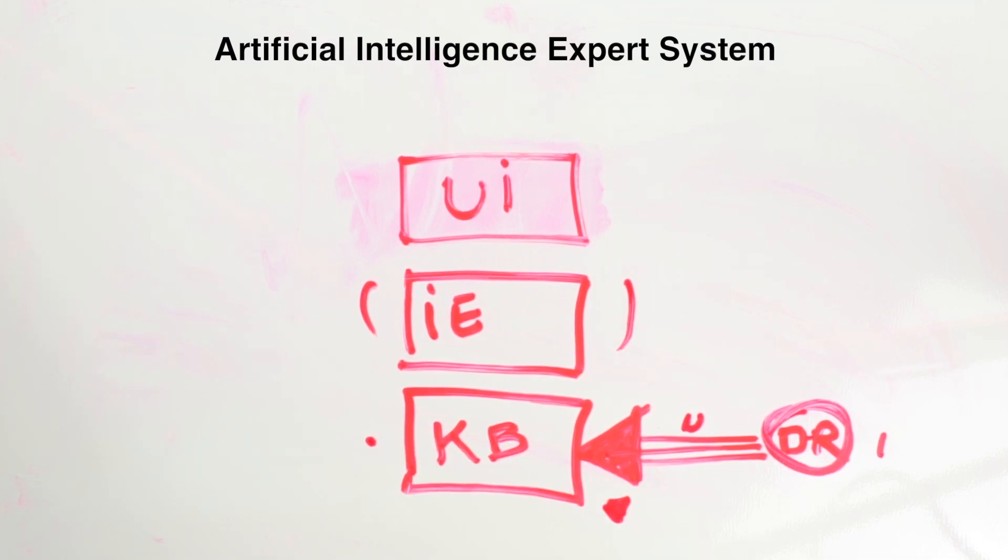Now, there's different types of inference engines. There's a deterministic inference engine. This type of inference engine has an element of certainty. The conclusions drawn are guaranteed to be true. For example, how many protons are found in the nucleus of a hydrogen atom? Since this is a known fact, the result is said to be true.